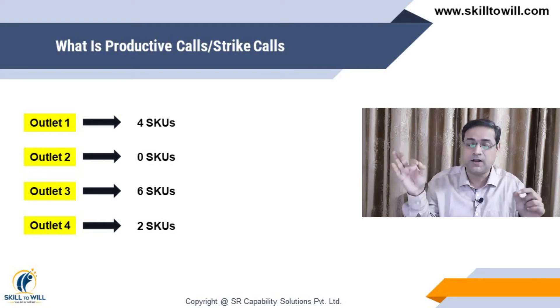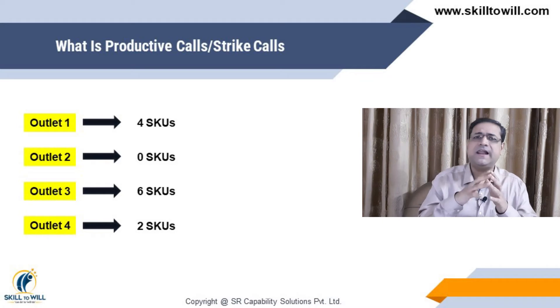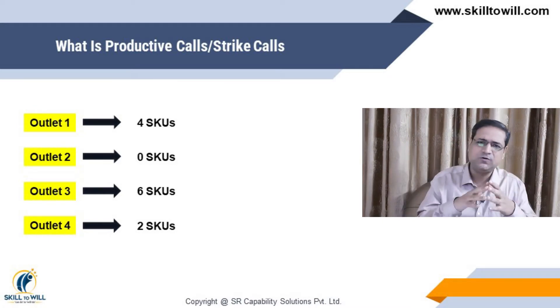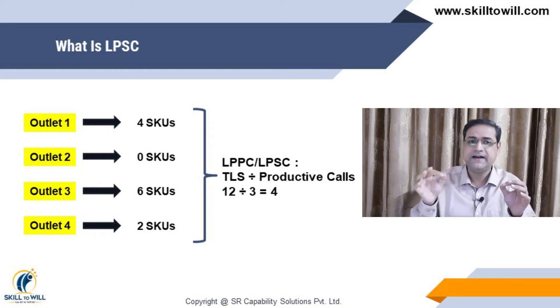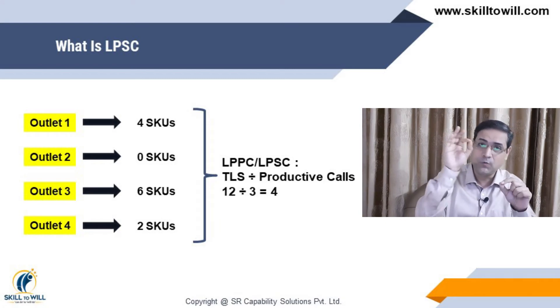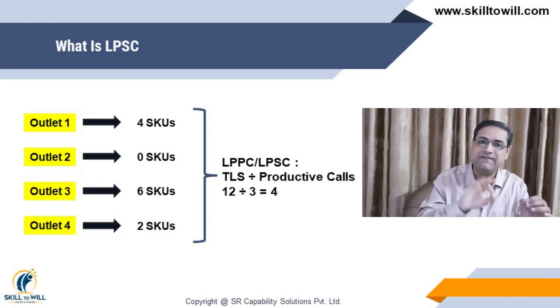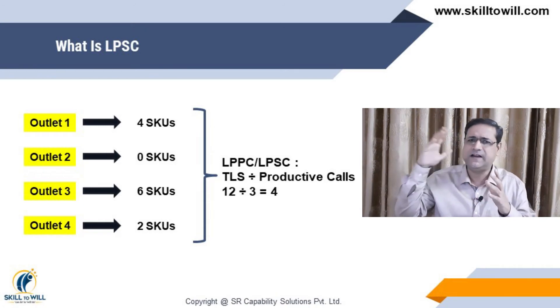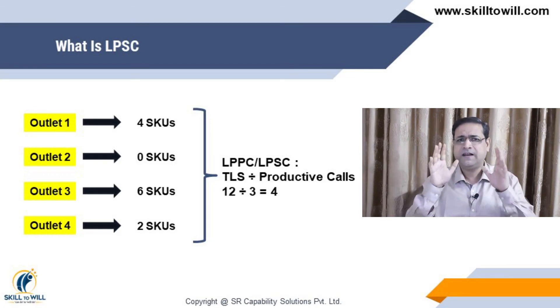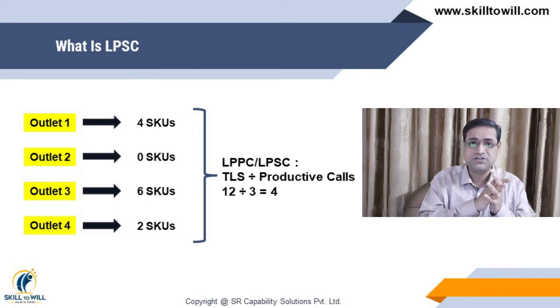Now let us understand what is LPSC — Lines Per Strike Call — and LPPC — Lines Per Productive Call. The calculation is: LPSC equals TLS divided by the number of productive calls. This is how we calculate and track LPSC and LPPC, and this is also how we can increase our range selling in the outlet.